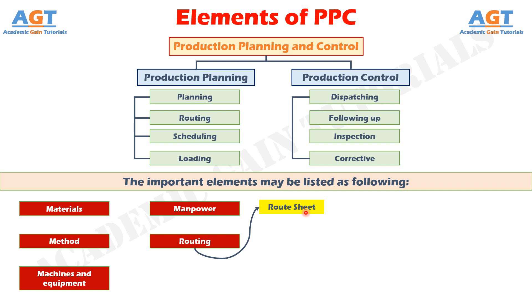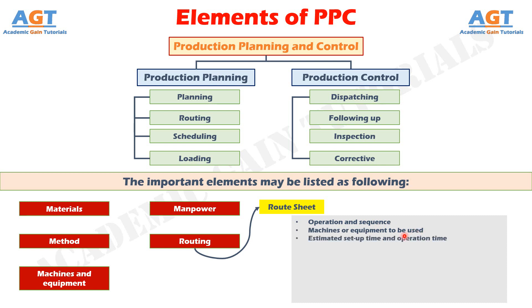It defines each step of the production operations and lays down the precise path or route through which the product will flow during the conversion process. The route sheet contains the following information: the operations required at their desired sequence, machines or equipment to be used for each operation, and estimated setup time and operation time per piece.